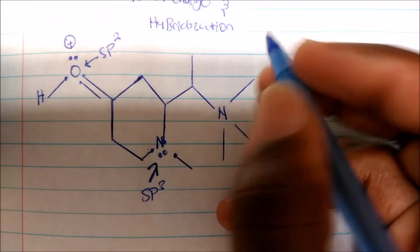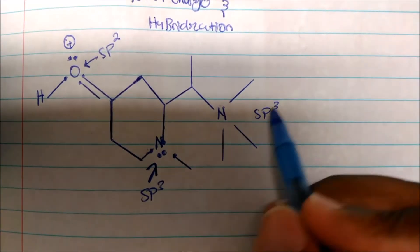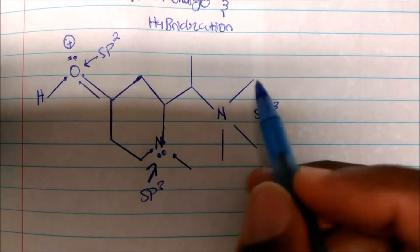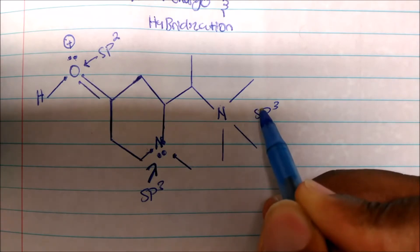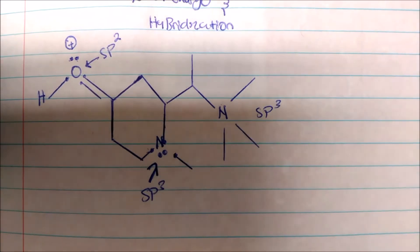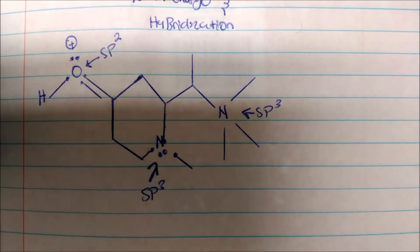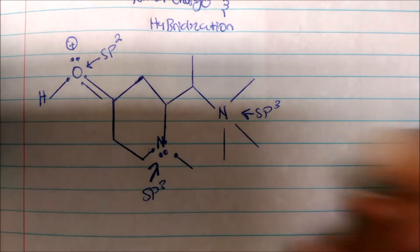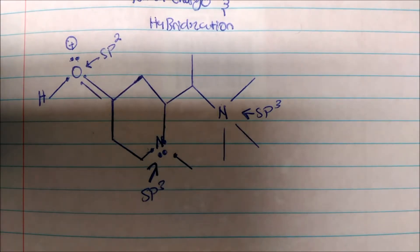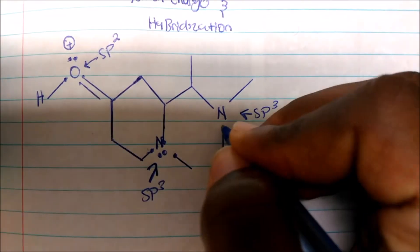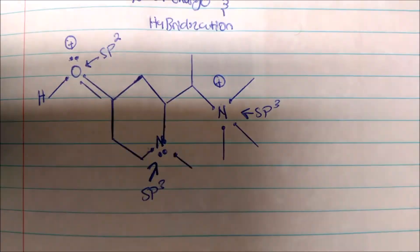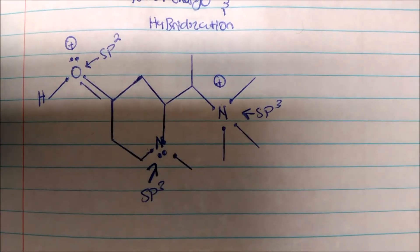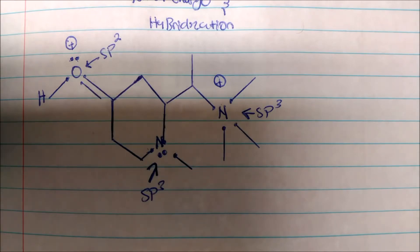Looking at this hybridization, this nitrogen will be sp3, because the steric number is four — you have four electron groups around nitrogen. This lone pair counts as one, and the three bonds count as the other three. So this is sp3 hybridized. The formal charge: nitrogen has five valence electrons, minus how many electrons are around nitrogen — one, two, three, four — so five minus four gives a plus one charge on this nitrogen.